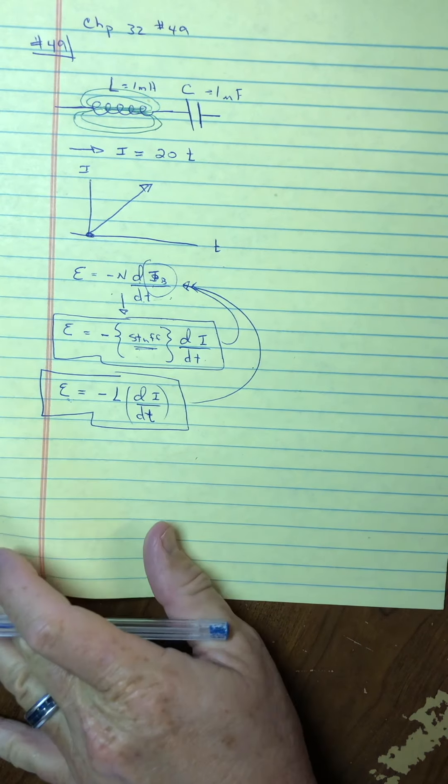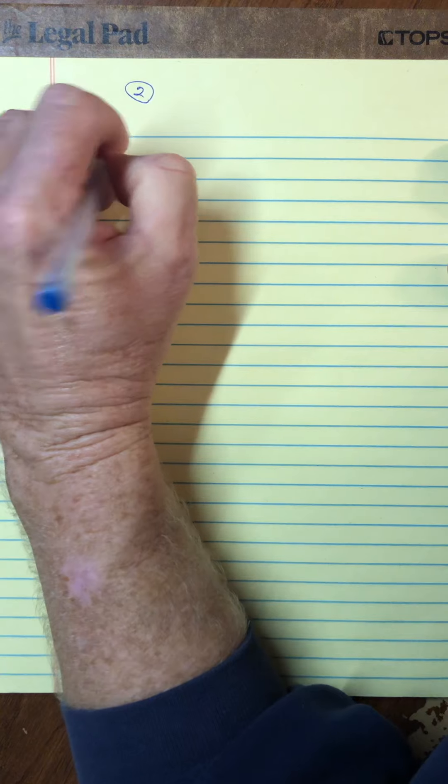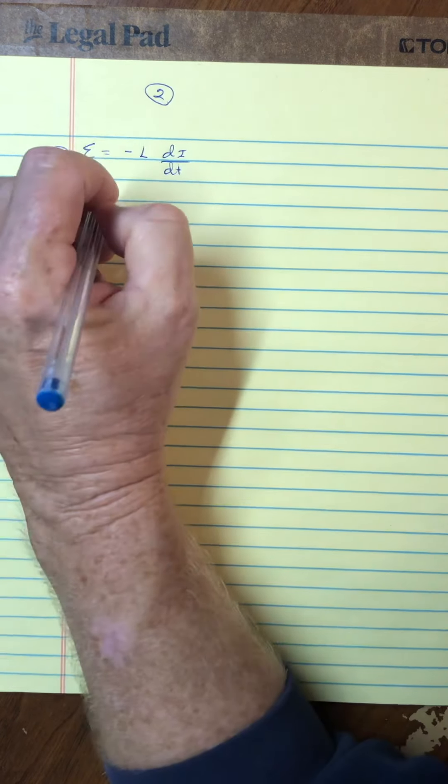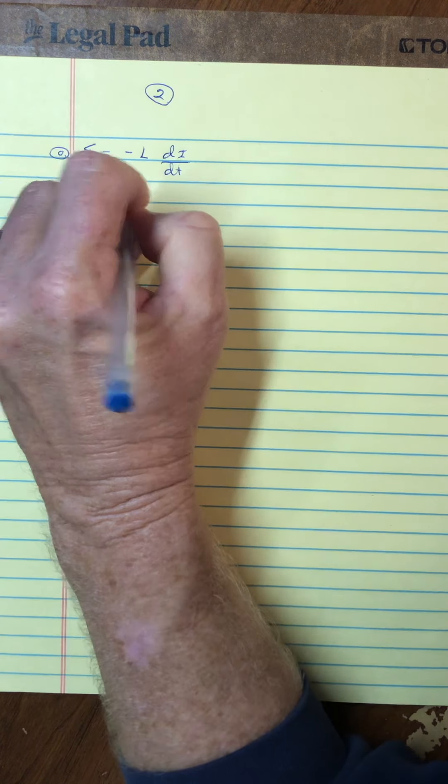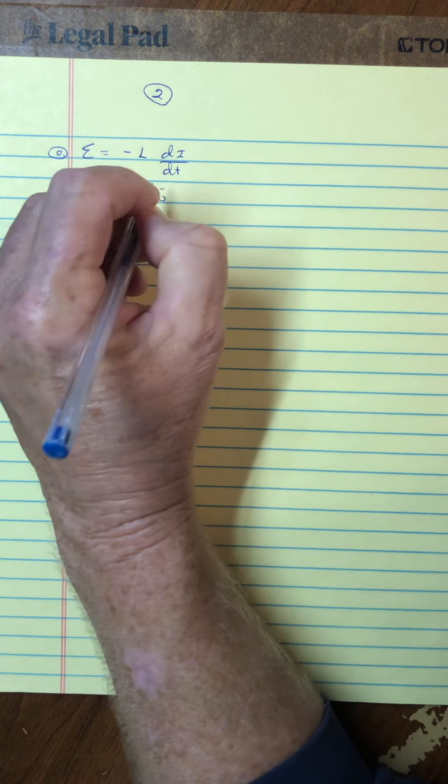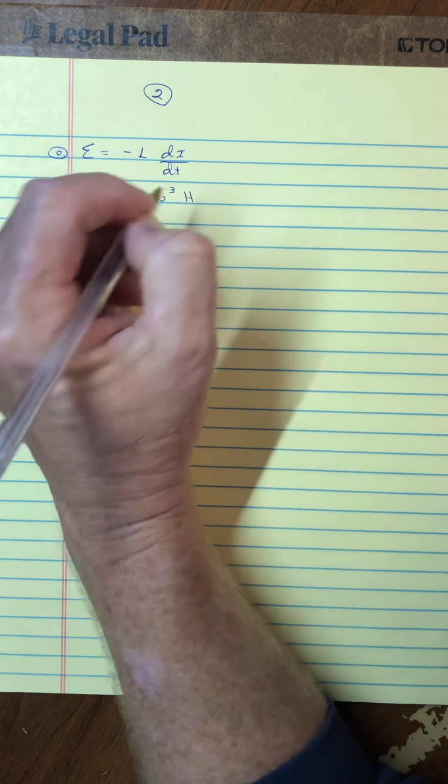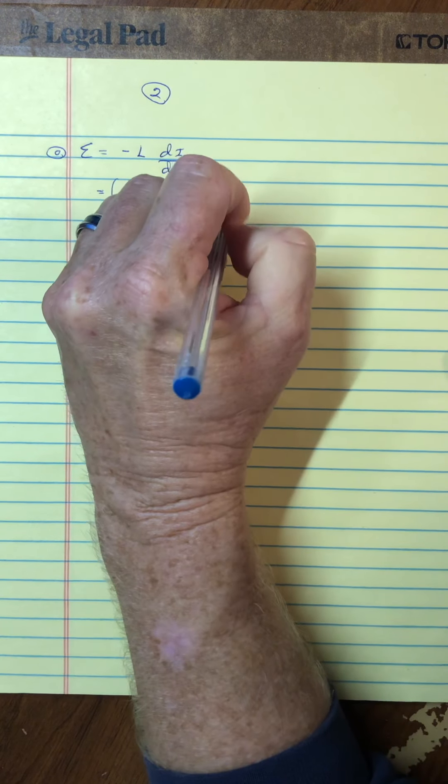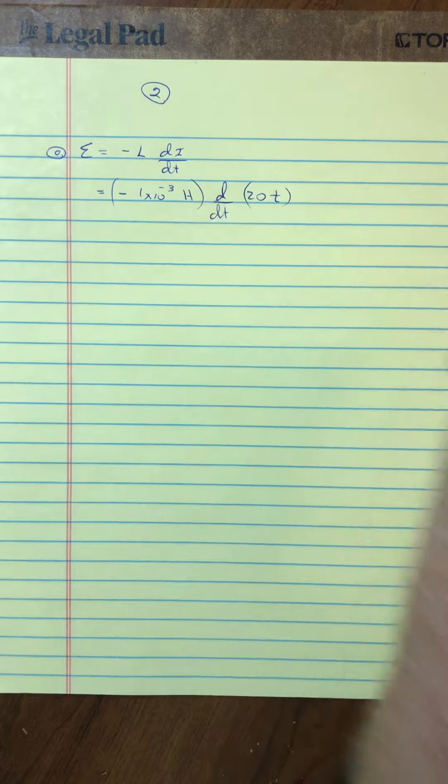All right. So, with that in mind, maybe I'll just go to page two. Let me grab another one. All right. So, on page two here, let me just use this idea that the EMF is the inductance times the di/dt. Because that actually then makes part A real simple. Because they told us, directly in the problem, that the inductance is 1 millihenry. And the current, they also directly told us, is 20 multiplied by T.